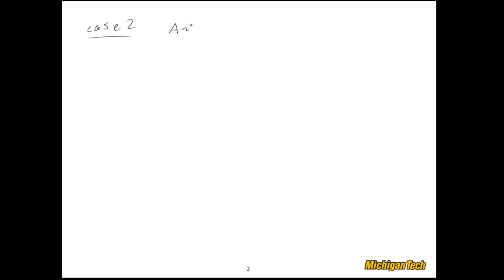Special Case 2 is a bit more interesting — this is the case where the entire row is zero. Again the system is definitely unstable, but now there is some physical significance to what's happening.